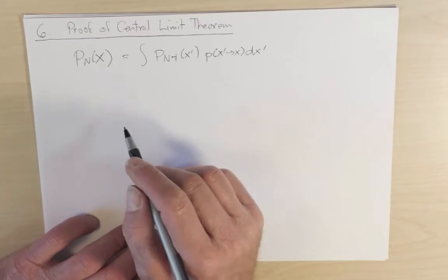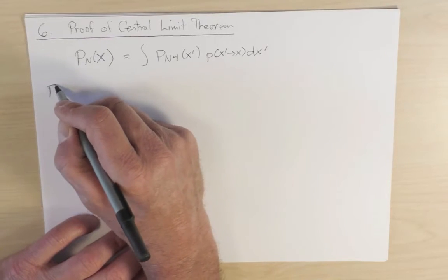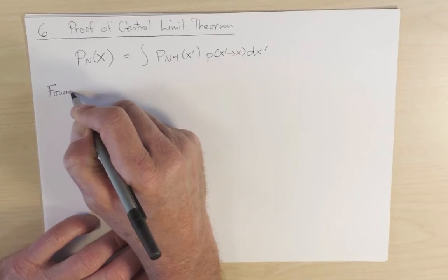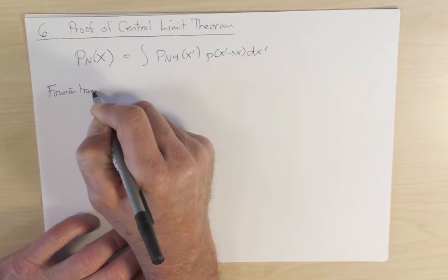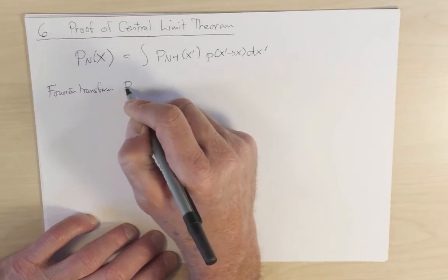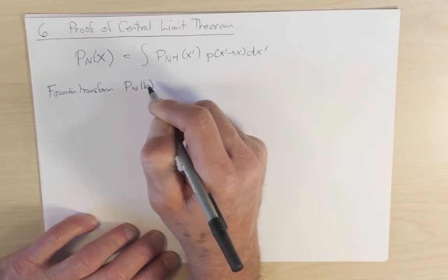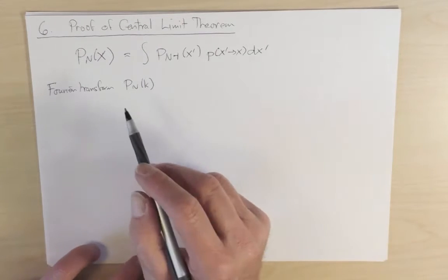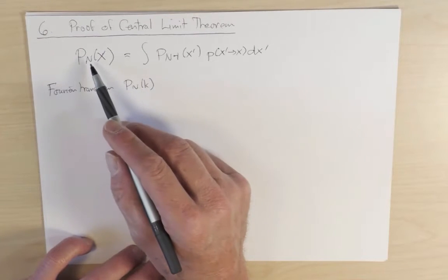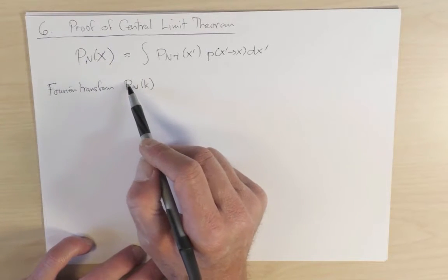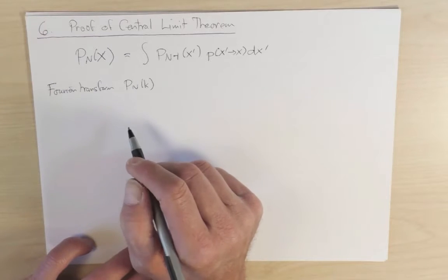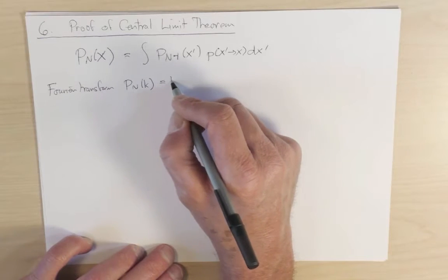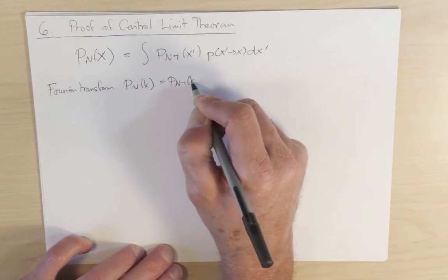After the Fourier transform, we have the much simpler statement that P_n of k—and the k is to emphasize that we have now the Fourier transform function. P_n of k is not P_n of x with x replaced by k, but it's a different function altogether, the Fourier transform. It's equal to P_{n-1} of k times little p of k.